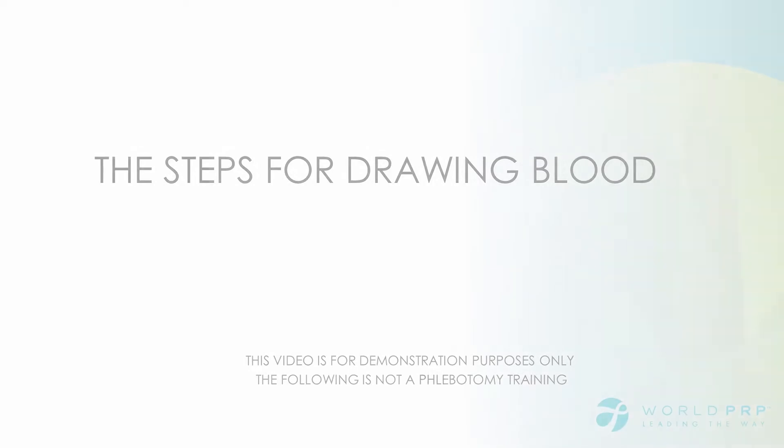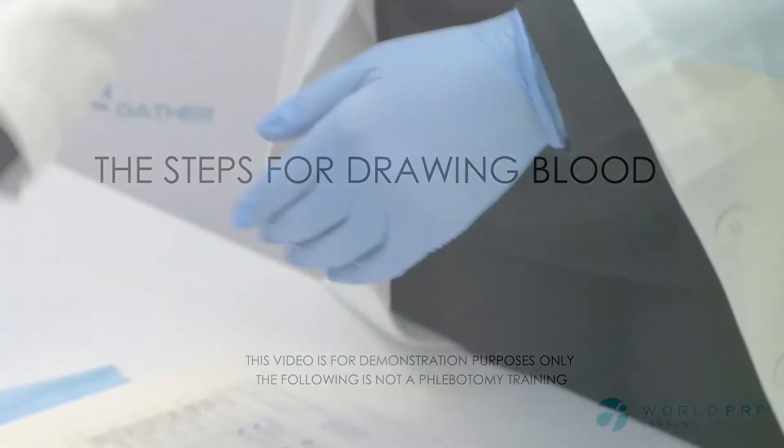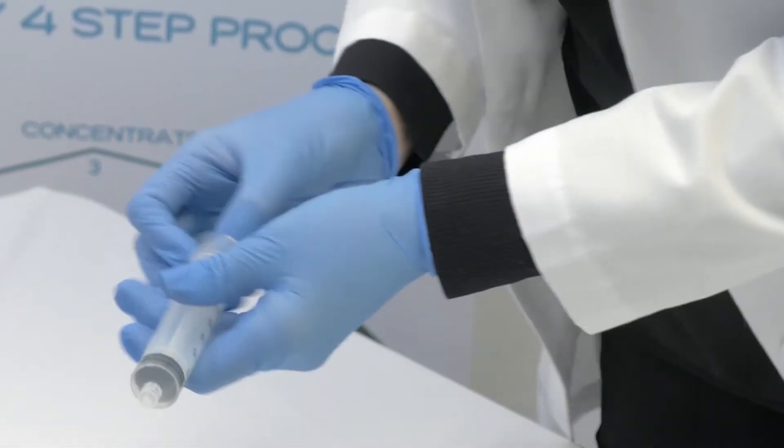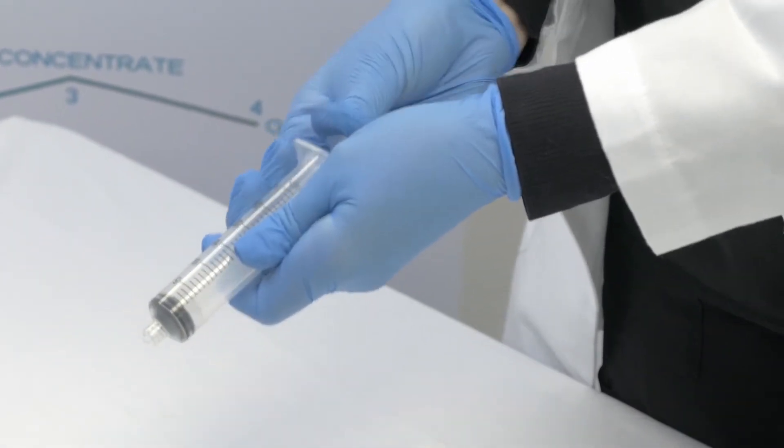We will now demonstrate how to use the medical supplies to perform a blood draw. This is for demonstration purposes only. This is not a phlebotomy training. Put gloves on and prime the 30 ml syringe by pulling the plunger back and forth a few times.